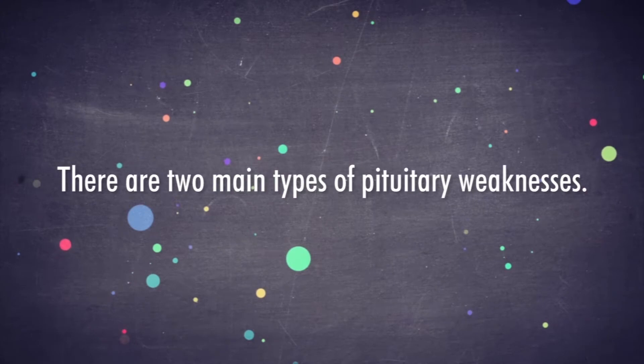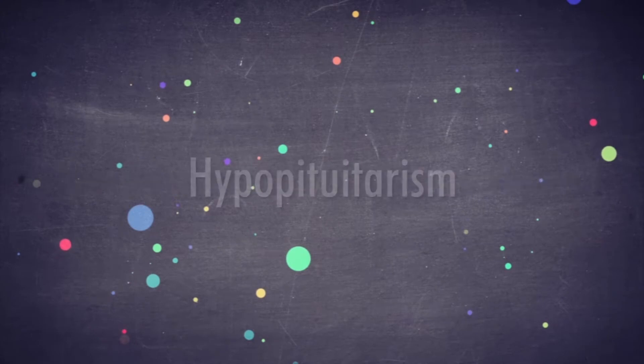There are two main types of pituitary weaknesses. The first one is hypopituitarism. Hypopituitarism, also known as pituitary insufficiency, is a rare disorder when the pituitary gland doesn't produce enough of its hormones.